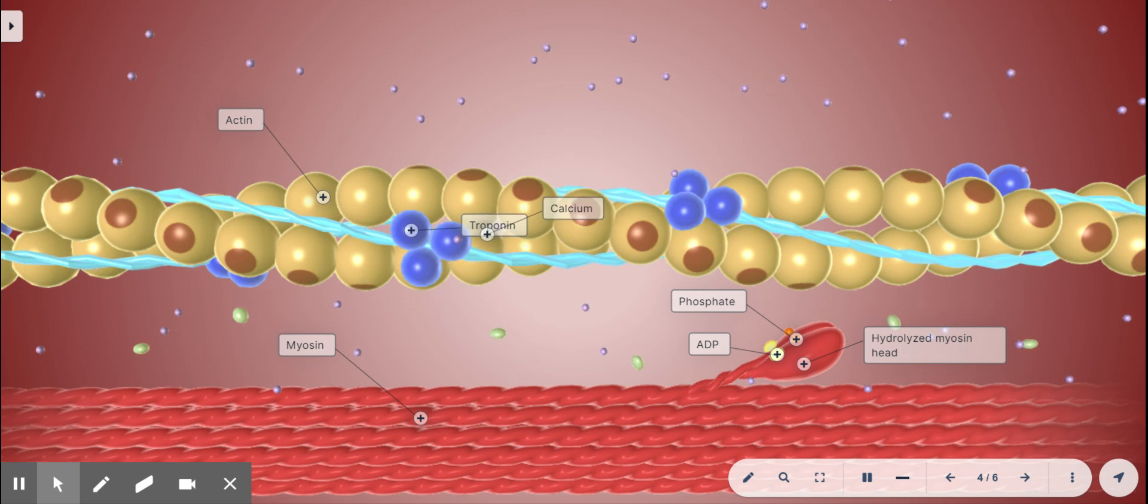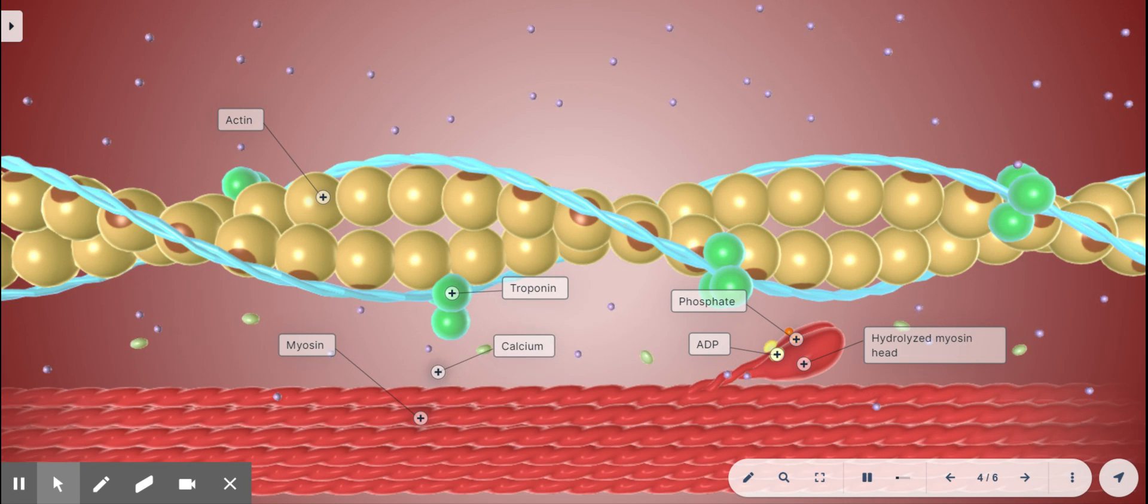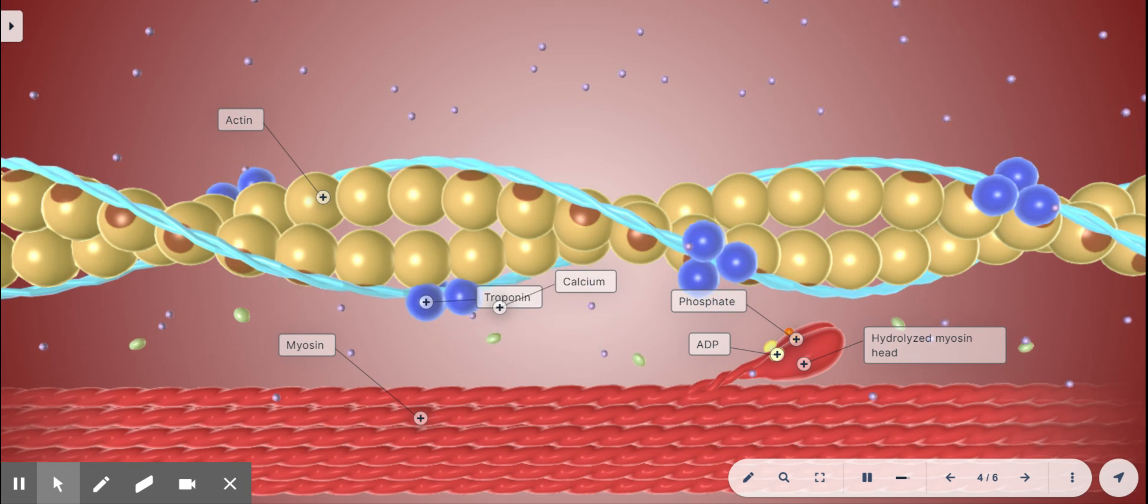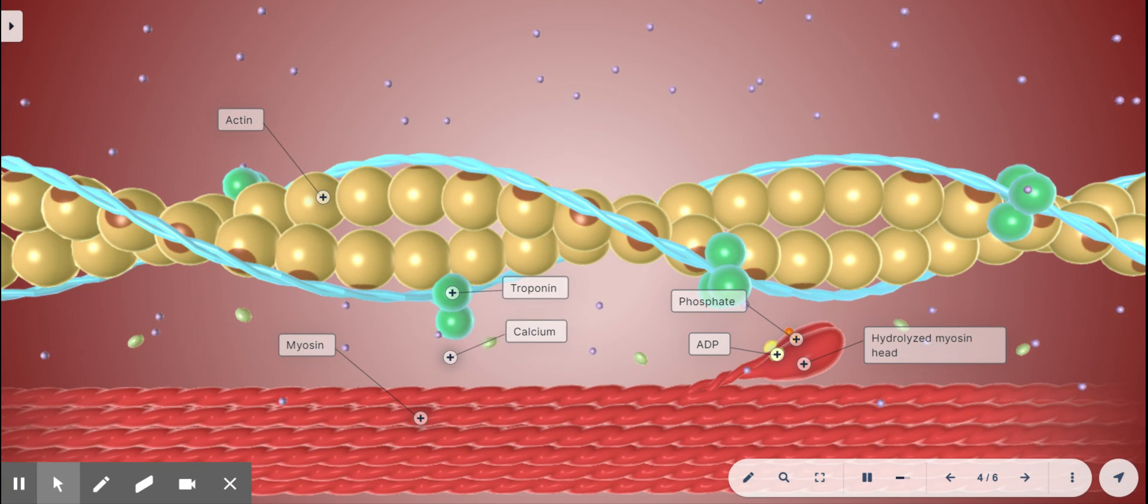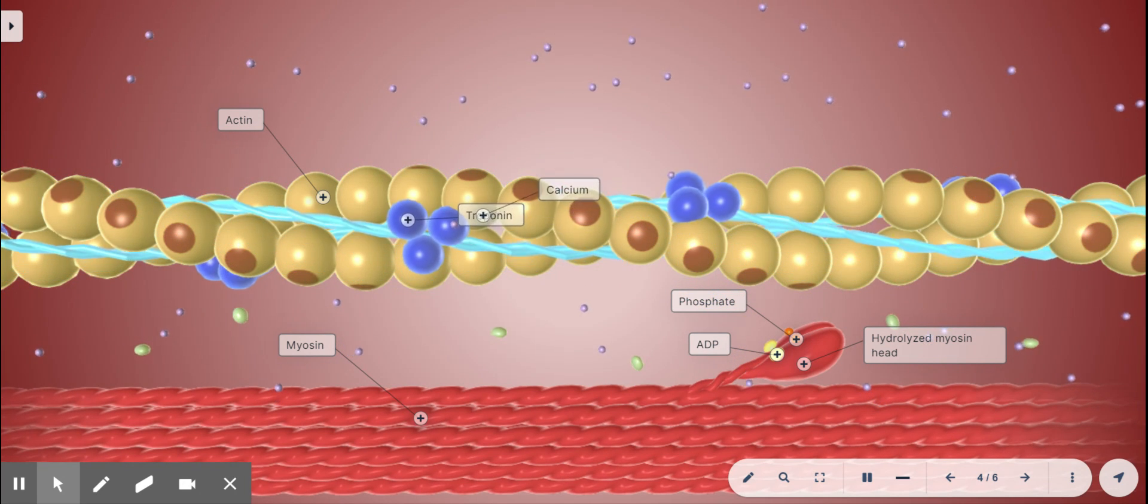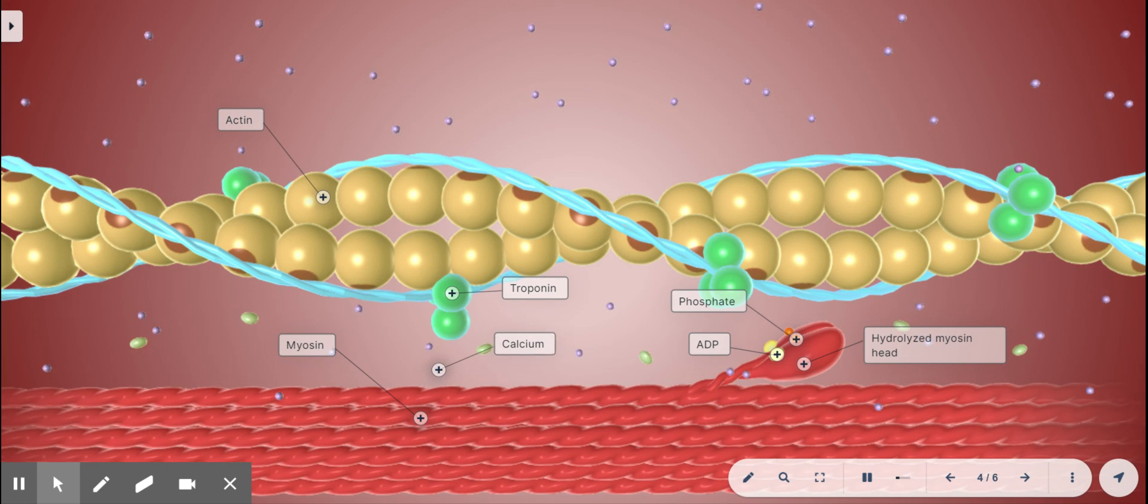Keep in mind that a muscle cell or fiber is basically a bundle of thousands of these thick and thin filaments arranged side by side. The myosin in the thick filament grabs and pulls on the actin in the thin filaments so the thin filaments slide inward causing the shortening or contraction of the muscle fibers.